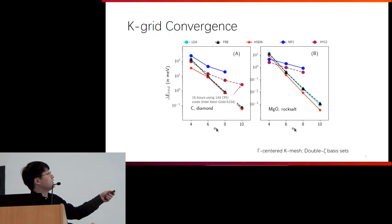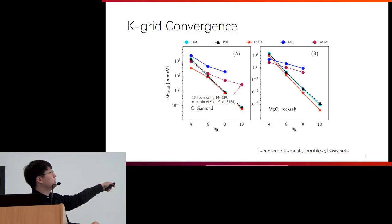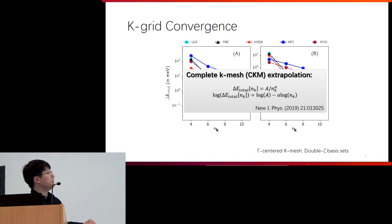Here I show you the k-grid convergence of different kinds of methods: PBE, HSE, and MP2. XYG3 is an MP2-based method. We selected carbon diamond and MgO to show you the k-grid convergence. We see that LDA, PBE, and HSE converge very fast, but MP2 convergence is very slow. For an 8x8x8 grid, the error remains about 0.10 milli-eV per atom. So in order to achieve the complete k-grid limit, we use this kind of extrapolation scheme. In our paper, we discuss how we can speed up the convergence or achieve higher accuracy by optimizing alpha and m simultaneously.